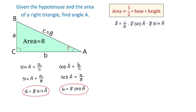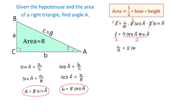Now let's simplify: one-half times 8 is 4. So we have 8 equals 4 cosine of A times sine of A. In the next step, I will divide both sides by 2 and then use a trigonometric identity. On the left side we have one-half and on the right side 2 cosine of A times sine of A.